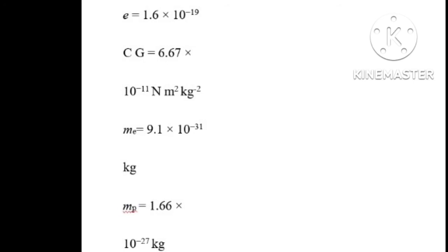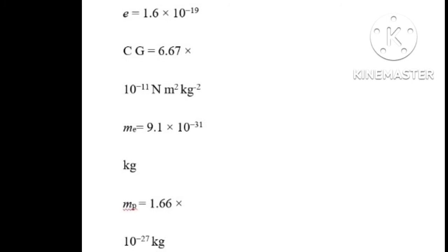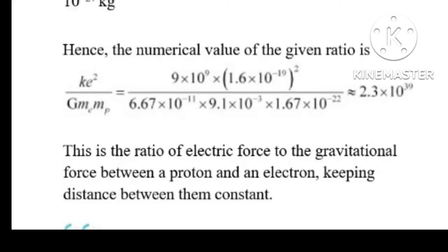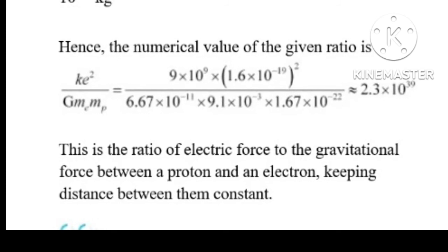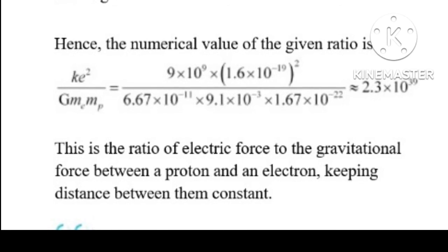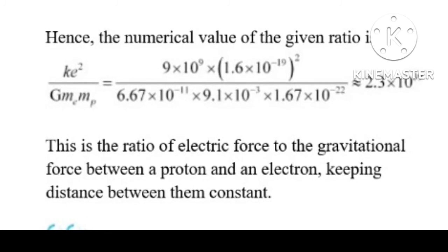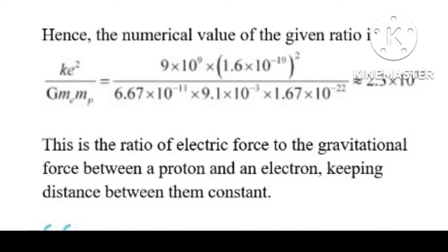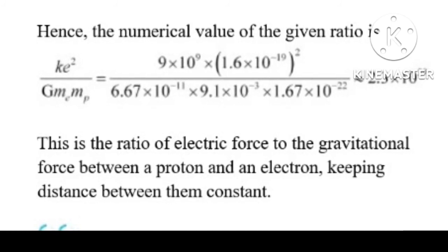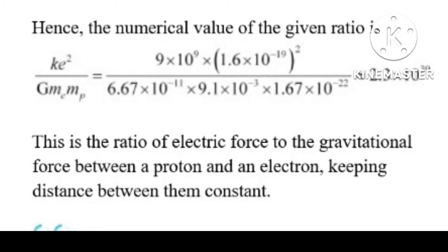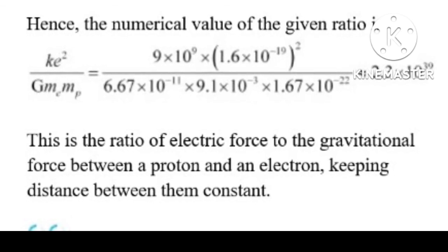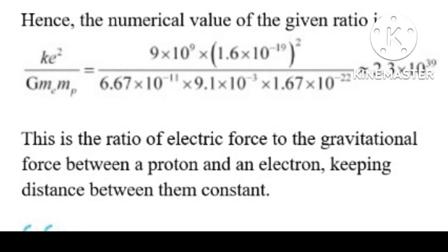To find the numerical value, substituting: e = 1.6×10⁻¹⁹ C, G = 6.67×10⁻¹¹ N·m²/kg², m_e = 9.1×10⁻³¹ kg, m_p = 1.67×10⁻²⁷ kg. The ratio ke²/Gm_e·m_p = (9×10⁹ × (1.6×10⁻¹⁹)²) / (6.67×10⁻¹¹ × 9.1×10⁻³¹ × 1.67×10⁻²⁷) ≈ 2.3×10³⁰. This ratio represents the ratio of electric force to gravitational force between a proton and an electron at the same distance.